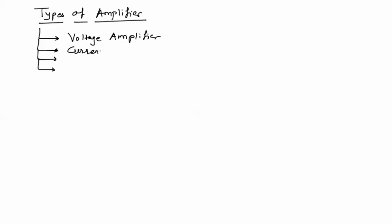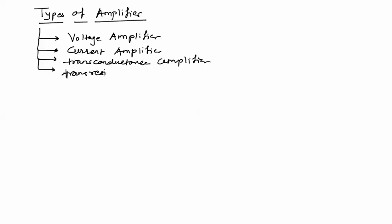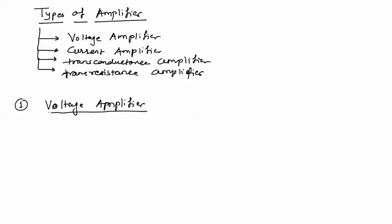The first type is the voltage amplifier. The second is the current amplifier. The third is the transconductance amplifier. The last is the trans-resistance amplifier. A voltage amplifier is the one which amplifies the input voltage and generates an output in the form of voltage. Its gain is defined as Av = Vout / Vs.